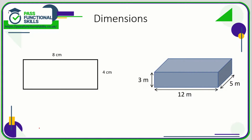On the left hand side we've got a rectangle. This is a 2D shape, which means it has two dimensions: it has a length and it has a width. From these dimensions we can work out the area and we can also work out the perimeter. The area is going to be these two dimensions multiplied together, and the perimeter is going to be all of the dimensions including the opposite sides added together as well.